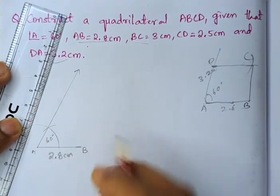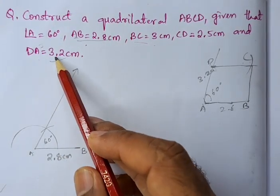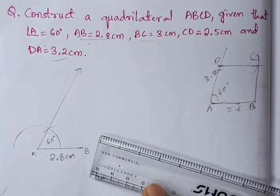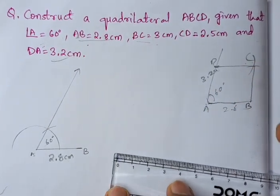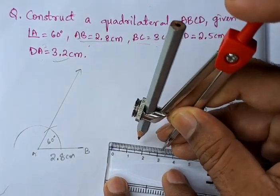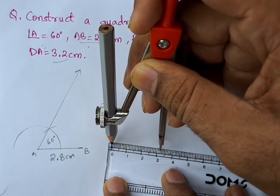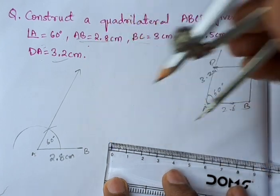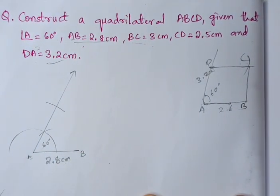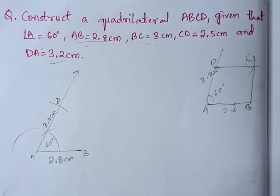This is 60 degrees. After getting 60 degrees from A, we need AD which is 3.2 centimeters. So let us take the radius 3.2 centimeters. From A to D it is 3.2 centimeters — let us mark point D. This is 3.2 centimeters.